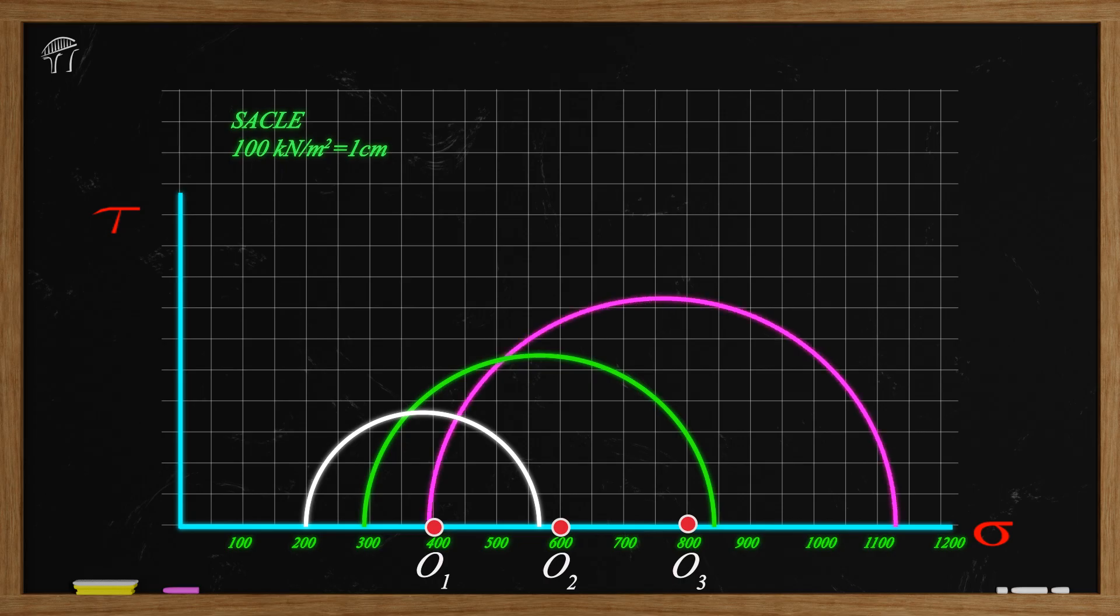Now, we have drawn all three circles. We can determine the value of C and phi. For that purpose, we will draw a common tangent to all these three circles. A common tangent line that touches all three circles simultaneously. This common tangent line represents the failure envelope.